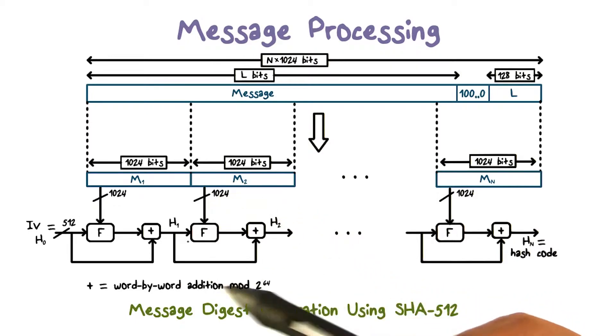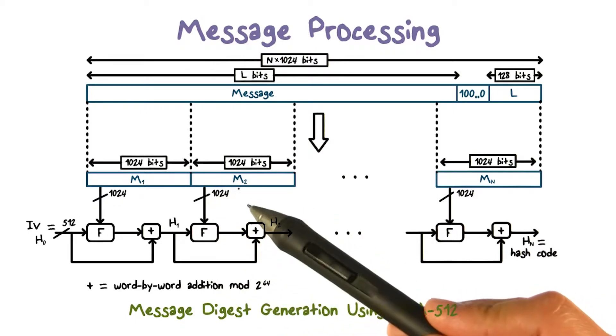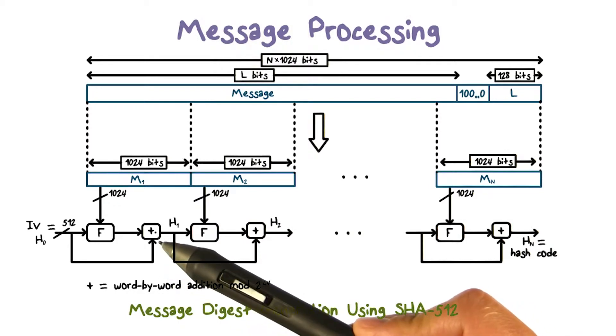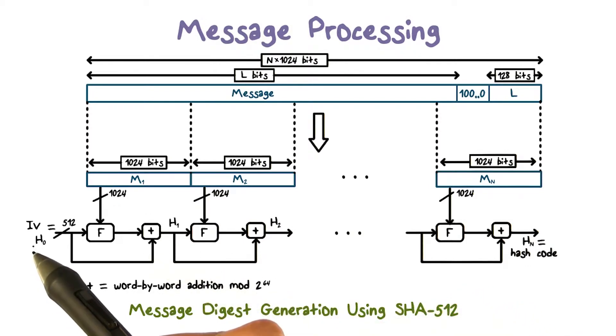That is, when processing the second block, the input includes not only the second message block, but also the output of the processing of the first block. And for the first block, the input includes the IV.